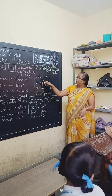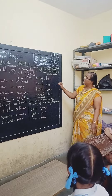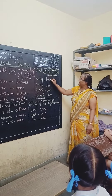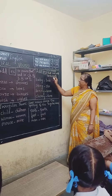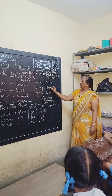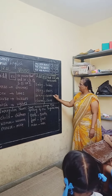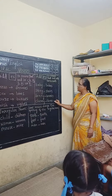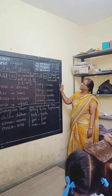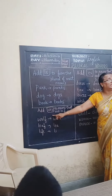When a noun ends in Y and the letter before Y is a consonant, you have to replace the Y with I and then add ES. For example, 'baby' becomes 'babies', 'story' becomes 'stories', 'cherry' becomes 'cherries'. So Y is replaced and ES is added. Understood?